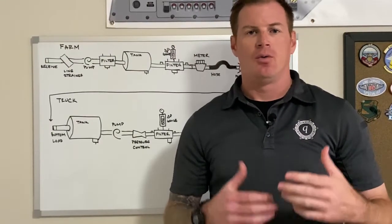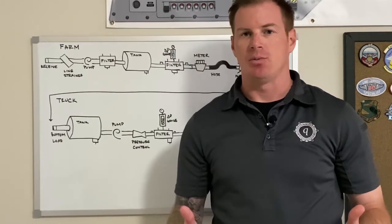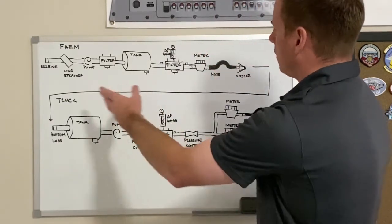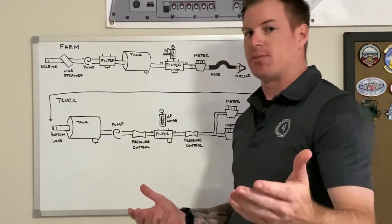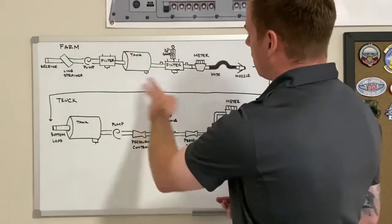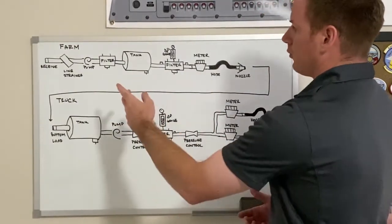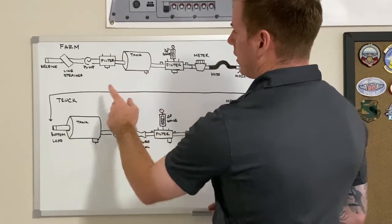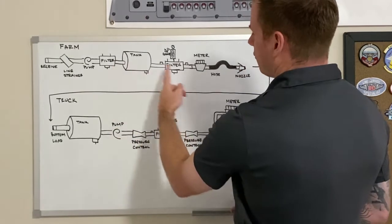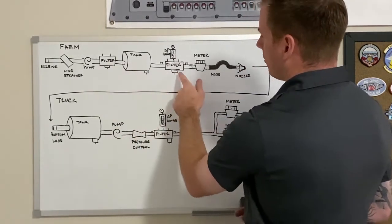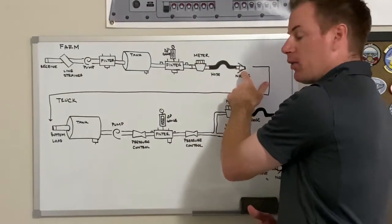When it comes to detection — where in the system are we going to look, at what frequencies, and using what methods — this is a linear diagram of a very generic fuel system. Starting with the fuel farm, we're going to look for contamination at the line strainer, the filter sump, the tank sump, and if you have separate inbound versus outbound filters, another filter sump, at the milliport connection, and then at the nozzle screen at the loading rack.